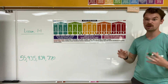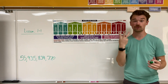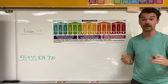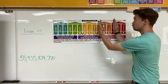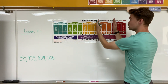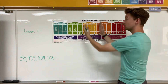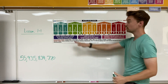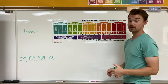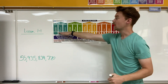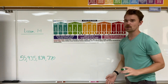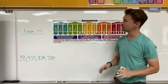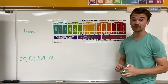Every single place value can be divided up into three different places, or we call them periods. You see the orange section — that would be the ones period. The yellow section would be the thousands period. The green section would be the millions period. And the turquoise or teal color is the billions period.